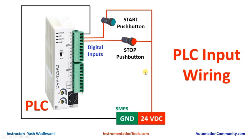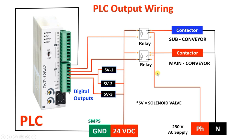We have a total of four outputs — two for the conveyor and two for the packing machine. Conveyors are motors and cannot be switched on and off directly from the PLC. We must use a starter with a contactor, which is energized by a relay, and the relay is energized by the PLC output. In the common terminal of both relays, we connect 230V AC supply.